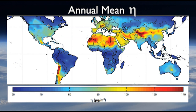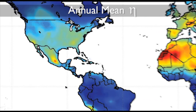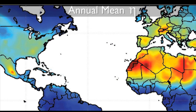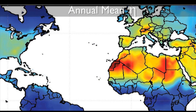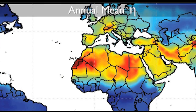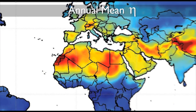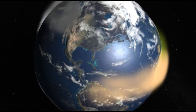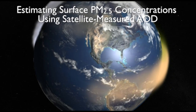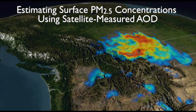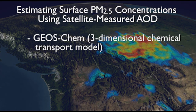Furthermore, the value of ETA varies in time and space, due to changing emissions and meteorology that impact the vertical profile and scattering properties within the aerosol column. Therefore, local, seasonally varying conversion factors are necessary to infer estimates of PM2.5 concentrations on a continental scale. Scientists at Dalhousie University, EPA, and NASA have developed a method for estimating surface PM2.5 concentrations using satellite-measured AOD and a three-dimensional chemical transport model called GEOS-Chem.